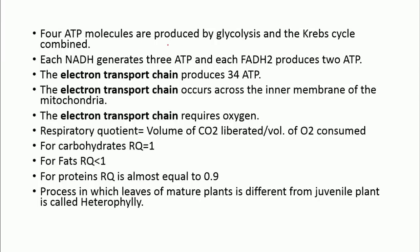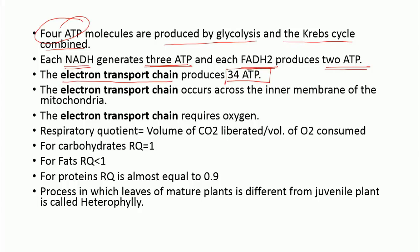Four ATP molecules are produced by glycolysis and the Krebs cycle combined. NADH produces 3 ATP and FADH2 produces 2 ATP. After the Krebs cycle, the electron transport chain follows, and it produces 34 ATP — so major ATP production during respiration is through the electron transport chain. The electron transport chain occurs across the inner membrane of the mitochondria. For this process, oxygen is required.